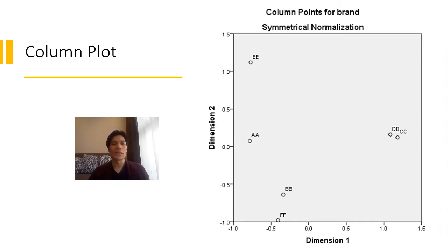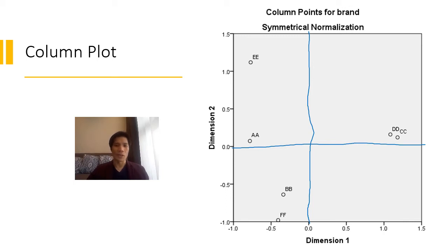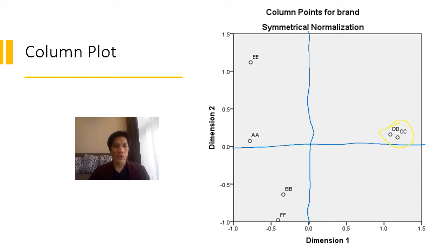The next thing to look at is the column points for the brands. You'll notice that all the brands are quite far from the origin, meaning no brand is similar to the overall centroid. Brand CC and DD are grouped together. Brand BB and FF are clustered in the lower half of the plot. And AA and EE are not similar to each other at all — they are really distinct from the other brands.